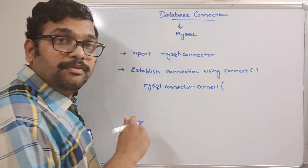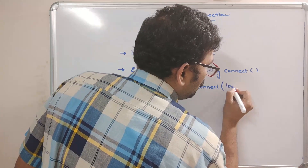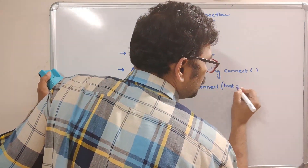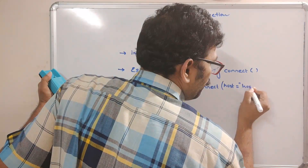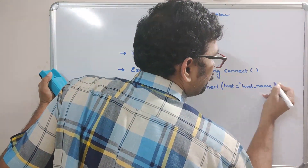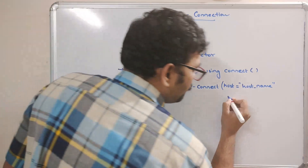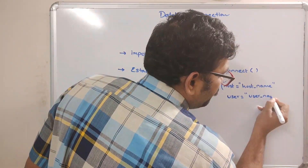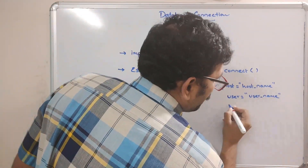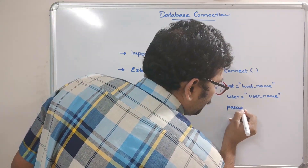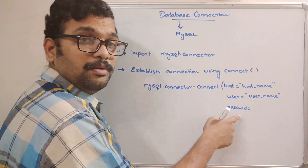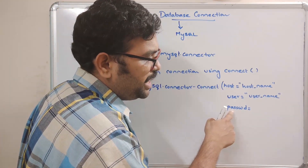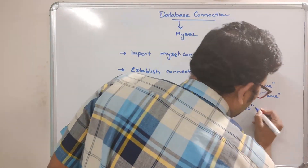In the connect method we need to pass four parameters. The first one is the host name — host is equal to the host name. The second one is the user — the username with which we are accessing the database. The third one is the password — passwd is equal to the password. Make sure to use the correct spelling for these parameters.